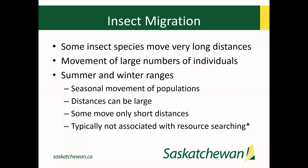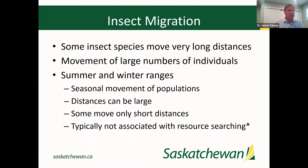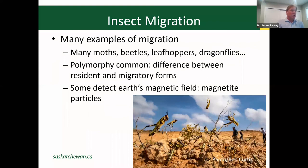We can get movement of individuals and even large components of populations over relatively short distances, which is common. Typically these movements are not associated with resource searching — they're not taking flight looking for food, as a rule — though there are many exceptions. Many examples of migration exist across most insect orders. We're talking 29 primary insect orders and many millions of insect species: moths, beetles, leafhoppers, and dragonflies that can move great distances.